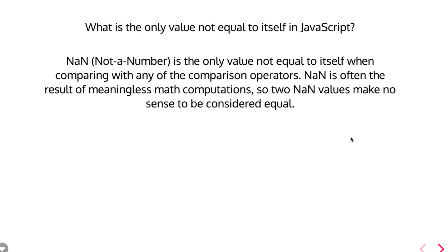What is the only value which is not equal to itself? NaN — Not a Number. This is an exception. NaN is not equal to itself. NaN can represent any non-numeric value, so obviously it will not be equal to itself because it doesn't even know what it is if it is not a number.